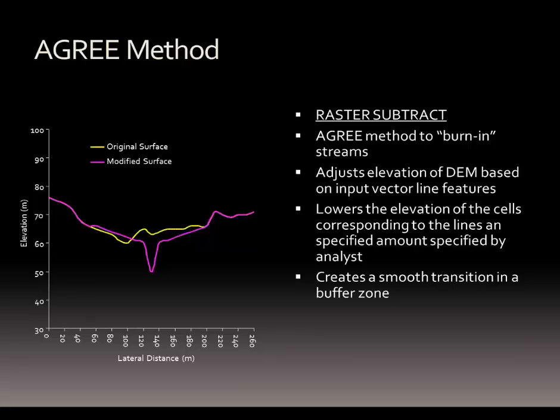The second approach is the agree approach, where we're burning in — taking the DEM and subtracting those areas that are causing water to pool on the landscape inappropriately. So we're essentially adjusting the DEM. We then rerun that process so it correctly models water movement on the landscape. It involves creating a special raster with some adjustments within it and then burning that into the raster.